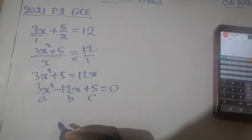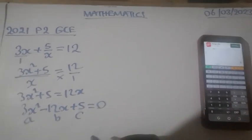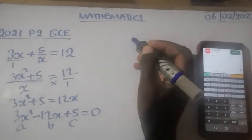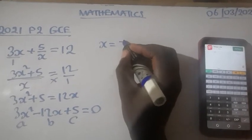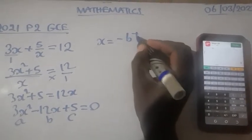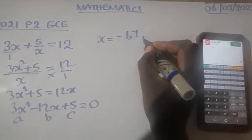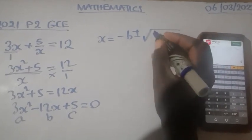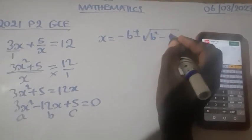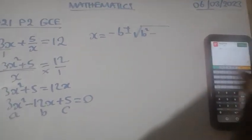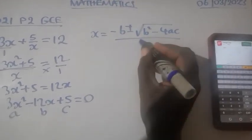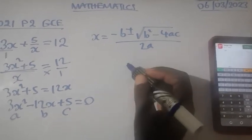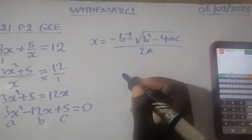So quadratic formula is written as x equal to negative B, positive or negative square root of B squared minus 4ac over 2a.